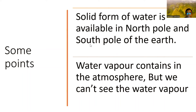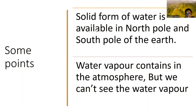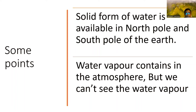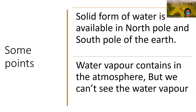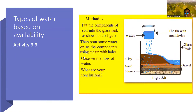Some key points: The solid form of water is available at the North Pole and South Pole of the world. Water vapor is contained in the atmosphere, but we cannot see it because it is a gas. Glaciers are found in the North Pole and South Pole regions.